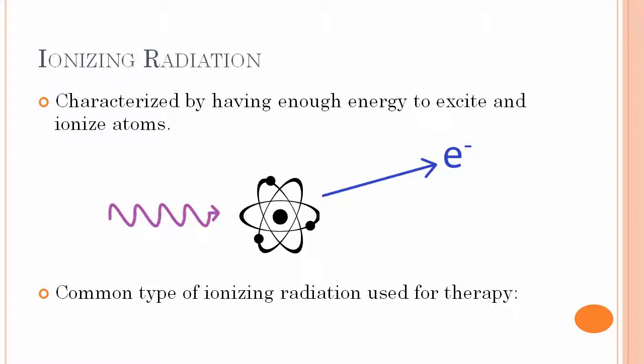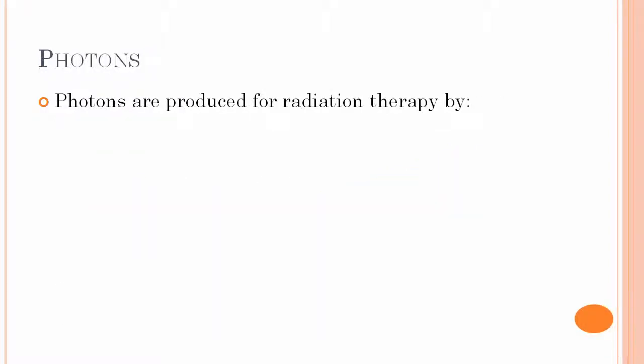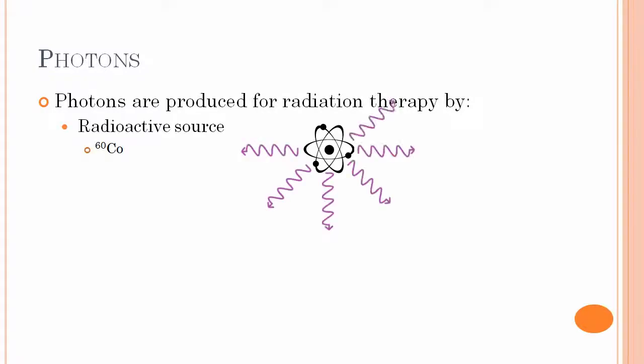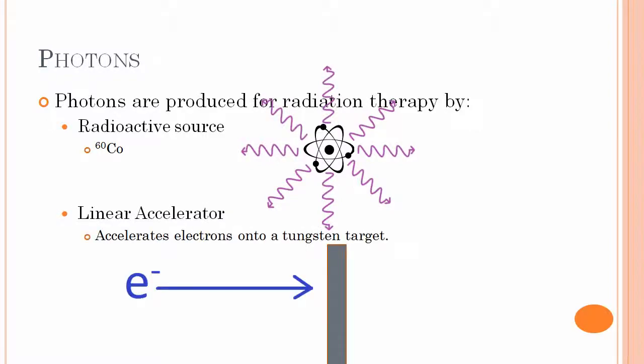Dose is caused by ionizing radiation, which is characterized by having enough energy to excite and ionize atoms. A common type of ionizing radiation used for therapy are photons. Photons are produced for radiation therapy by radioactive sources, such as cobalt-60, or by linear accelerators, which accelerates electrons onto a tungsten target to produce the photons.